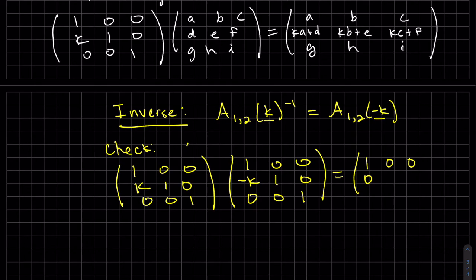What we were wanting. One. And no surprises on the last row. So yeah, these are inverses.